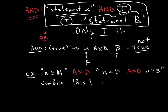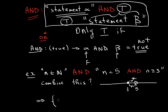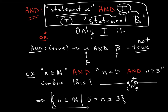So this whole combined statement is equivalent to saying: the set of n is an element of the naturals such that five is greater than n, which is greater than or equal to three. So the combined statement with "and" gives us n in the naturals satisfying 3 ≤ n < 5.